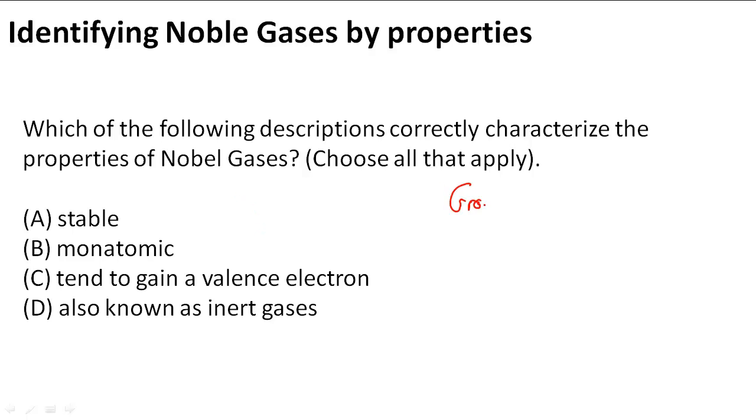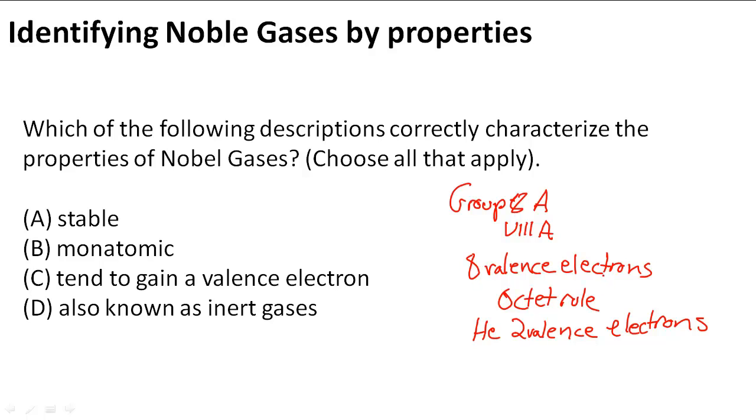We know noble gases are in Group 8A, or in Roman numeral style 8A, and that they have 8 valence electrons, which goes along with the octet rule, except for one of them, helium, which has 2 valence electrons. But that fills up its valence electron shell, so that means it's very happy where it's at with just 2 valence electrons. So we know all of this about the Group 8A of noble gases.